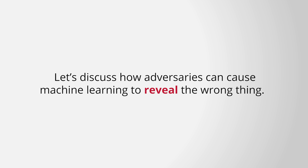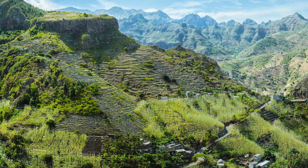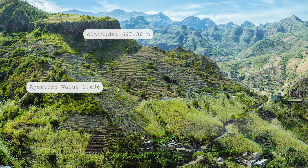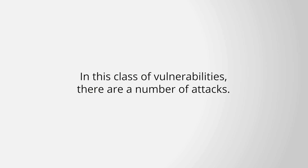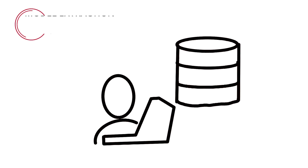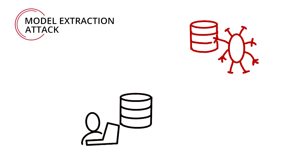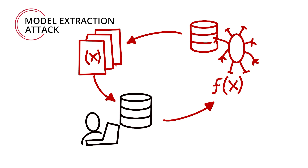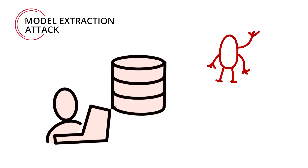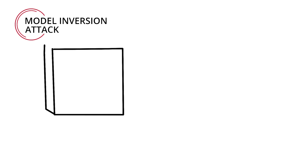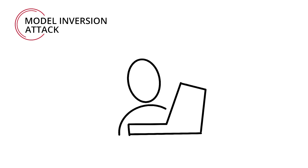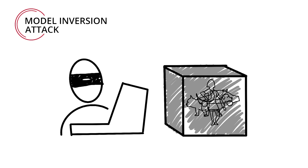Adversaries can also cause machine learning to reveal the wrong thing. In this class of vulnerabilities, an adversary uses a machine learning model to reveal some aspect of the model or training data set that the creator did not intend to reveal. In a model extraction attack, an adversary can create a duplicate of a model the creator wants to keep private — only needing to query the model and observe its outputs. This is concerning to machine learning-enabled API providers, since it can enable a customer to steal the model underlying the API. A model inversion attack is used to reveal information about the data set used to train a model.